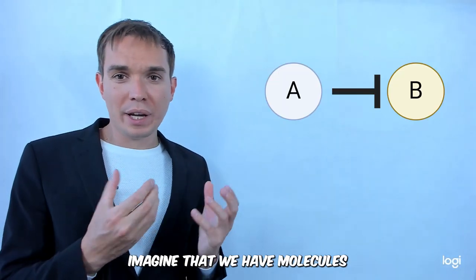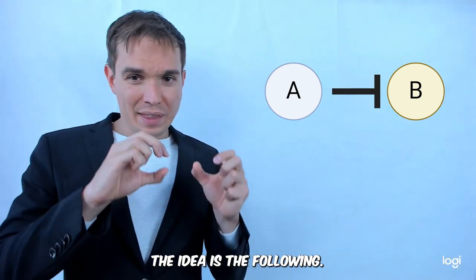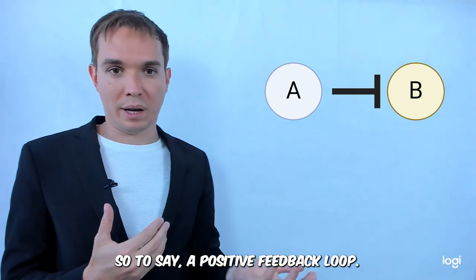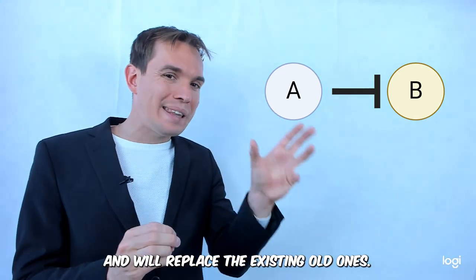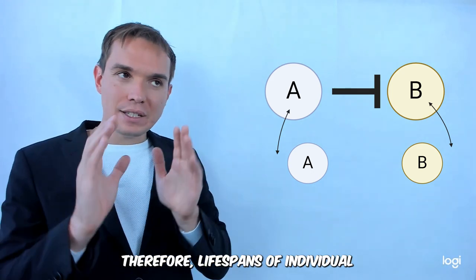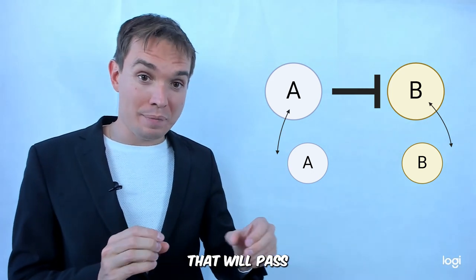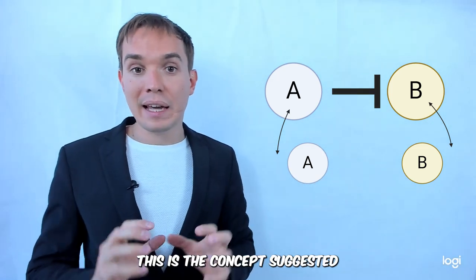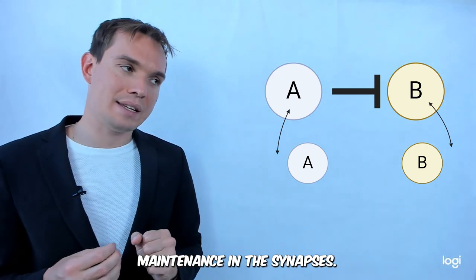Imagine now we have molecules A and B and the interaction connection between them. The presence of this interaction will launch, so to say, a positive feedback loop. In our case it means that new molecules A and B will be synthesized by the cell and replace the existing old ones. Therefore, lifespans of individual A and B molecules can be short, but the connection between them that will pass from one identical pair to another and so on and so forth can be long. And this is the concept suggested by the researchers to be the mechanism of LTP maintenance in the synapses.